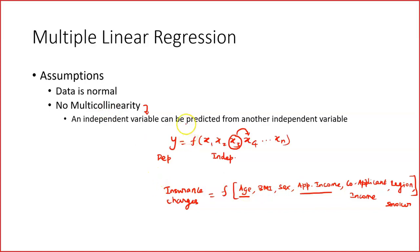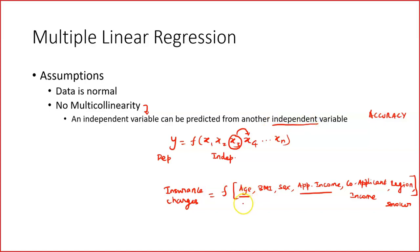So that means there is a relationship between age and applicant income, which means there is multicollinearity. If multicollinearity is there, it impacts accuracy. For multiple linear regression or regression in general, multicollinearity should not be there. This is a key test you need to do. There is a relationship between two or more independent variables — that is the most important thing. The factors causing multicollinearity must ideally be removed and the model rerun.